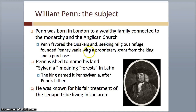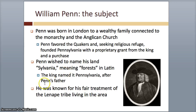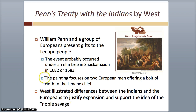We're looking at different artwork. Benjamin West is the artist; this is the subject — this is who he drew. William Penn was born in London and connected to a wealthy family. He favored the Quakers. He wanted religious refuge and he founded Pennsylvania because he wanted a place to practice his religion safely. Penn also wanted to name his land Sylvania, which means forests — that's why it's called Pennsylvania. He was also known for actually treating Native Americans well, unlike many colonists who were very mean to them.